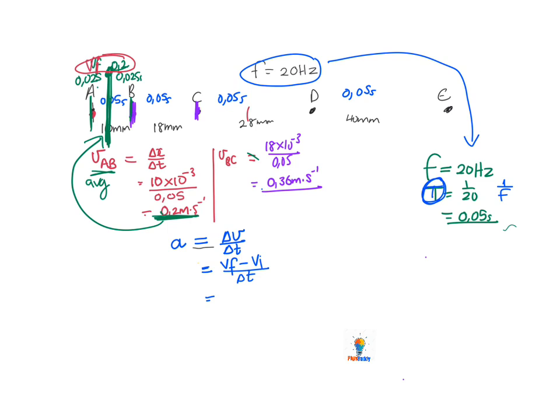We can do the same thing for the velocity between B and C. The average velocity of B C would be the instantaneous halfway in time, so 0.025 seconds, and the average velocity of B C was 0.36, so the instantaneous velocity there is 0.36. Now I have a velocity here and a velocity here, and I'm working in this time interval.